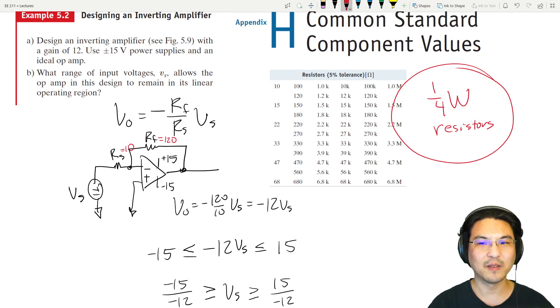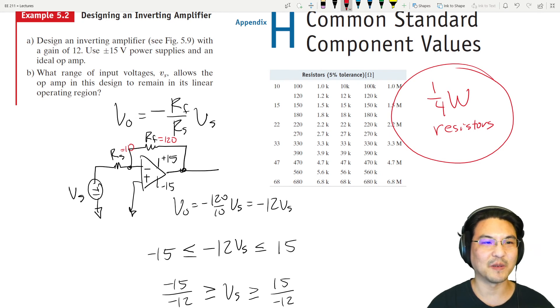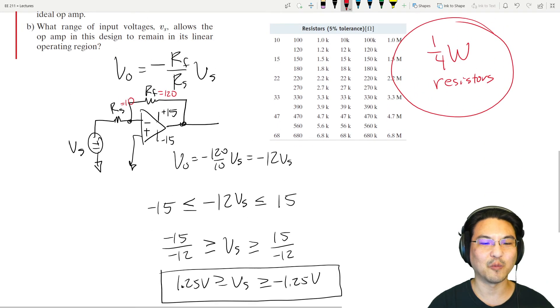For our example, how much power for each resistor? Let's say RS is 10. At most, if we're going to stick to our plus or minus 1.25 input voltage, then over here would be 1.25. Over here is the same as the voltage over here if it's an ideal op-amp, which is tied to the ground, so it's 0. So across RS, at most 1.25 volts.